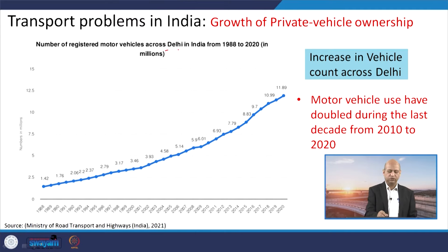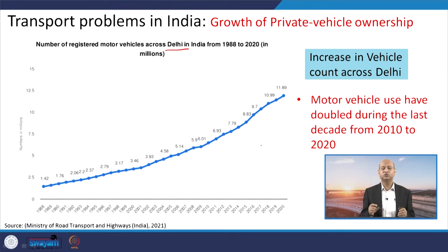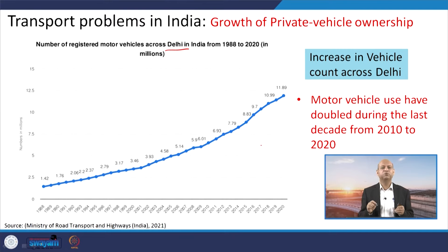Focusing on Delhi, from 1988 to 2020 there has been a continuous increase in vehicle ownership, growing tremendously, while the road infrastructure — that is, road length — has not increased proportionally. This is the reason why we have congestion, very slow speeds, and because of congestion and slow speeds, a lot of air pollution emissions, resulting in very low air quality in urban areas.